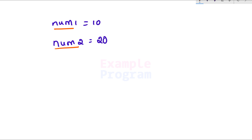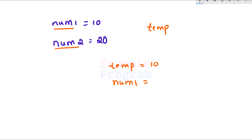We will use another variable — you can give it any name, but I'm going to call it temp. First we will store the value of num1 in the temp variable, so temp will contain 10. Then we will store the value of num2 in num1, so num1 will now contain 20.